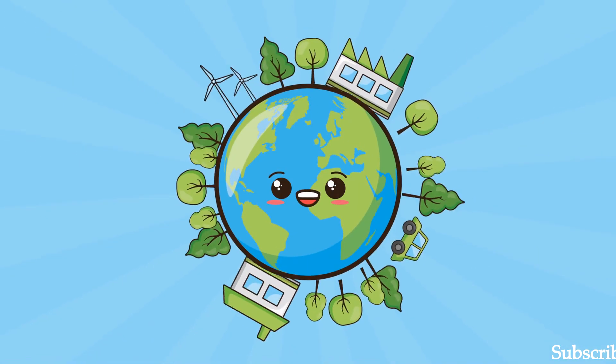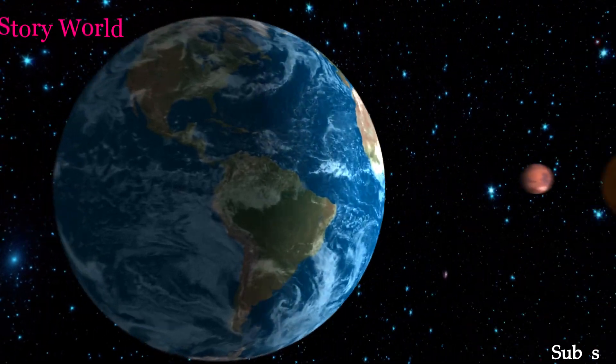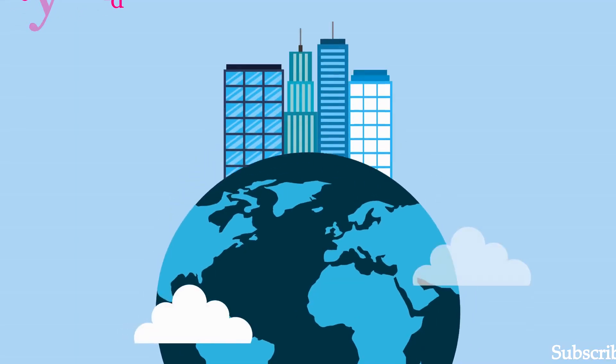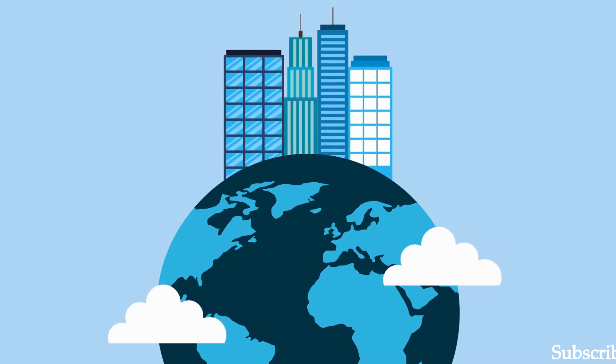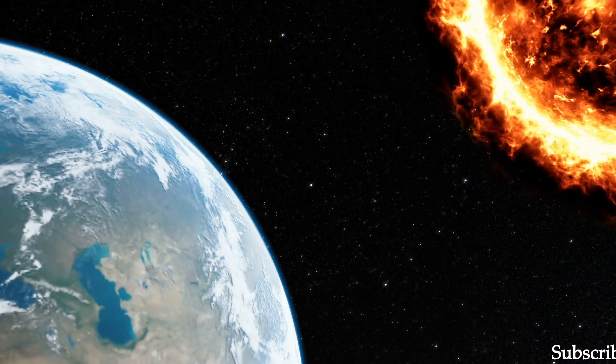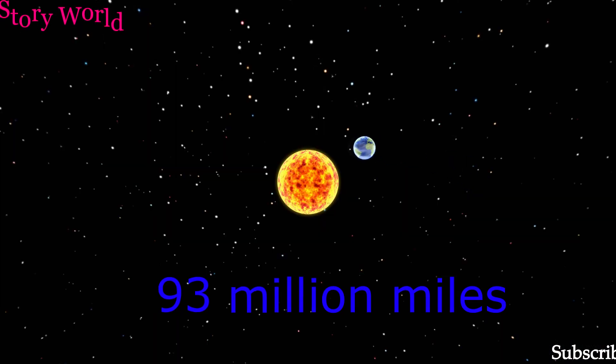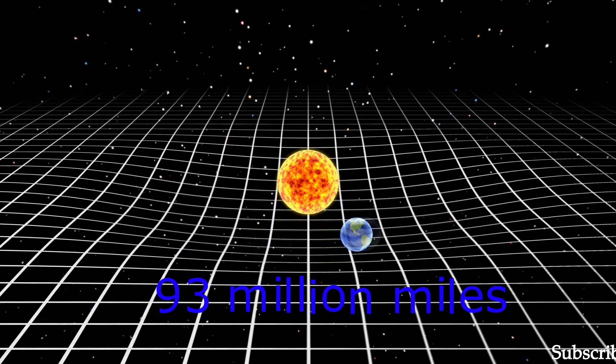Earth is the third planet in the solar system from the sun and our home planet in which we live. Earth is at the average distance of about 93 million miles from the sun.